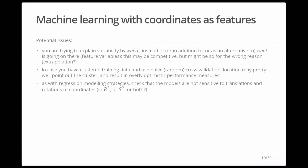You can also use machine learning with coordinates as features — people do this a lot. You have a table, a target column to predict, and throw in all features including coordinates. There are potential issues: if you try to explain variability by the 'where' — by coordinates — instead of or in addition to the properties of other locations, it may give you a good cross-validation model but possibly for the wrong reasons. Outside your domain it might entirely fail because coordinates rarely contain information themselves — they just say 'this is happening there.'